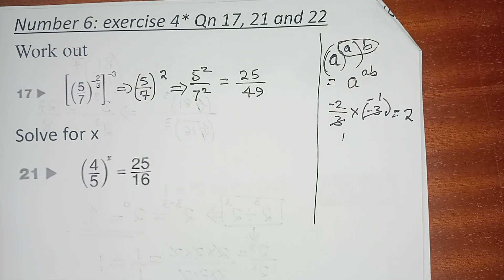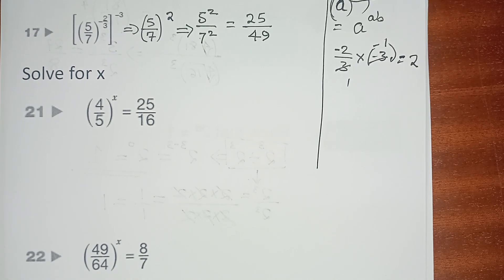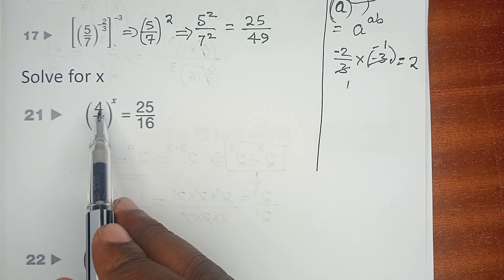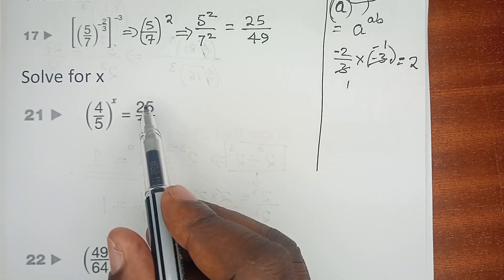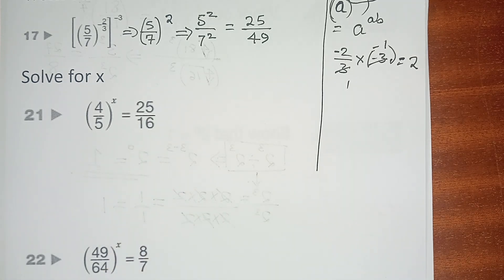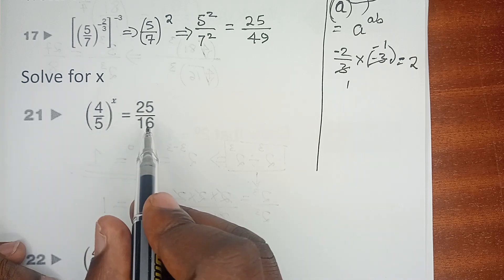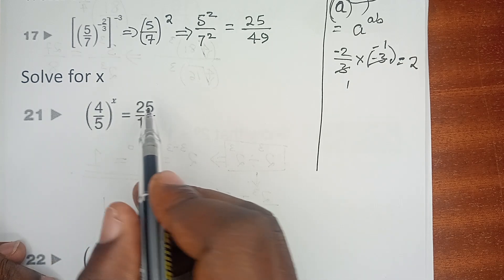In question 21 and question 22, we are supposed to solve for X. You will realize that there is (4/5) raised to power X, which is equal to 25/16.